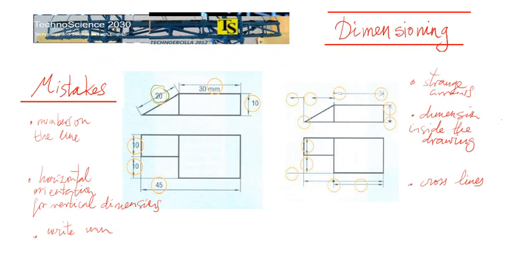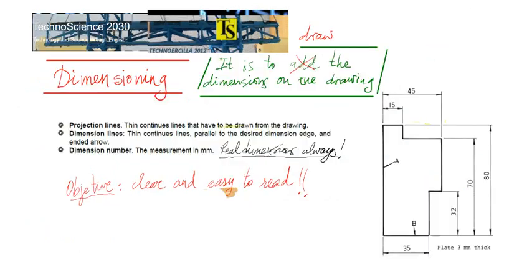Let's see some mistakes that you may make when you dimension. For example, one of the other mistakes is to put the numbers on the line. Numbers have to be, as you know, over the line, above the line, but never on the line.